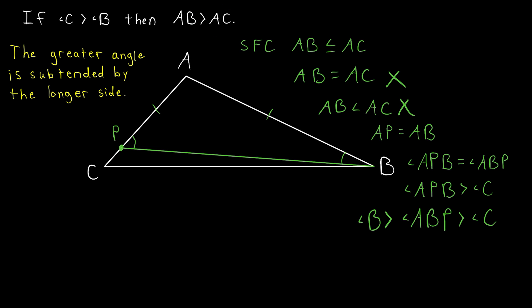So in a triangle, if one angle is greater than another, then the side opposite the greater angle is greater than the side opposite the shorter angle. It's a handy fact, and that's the proof.